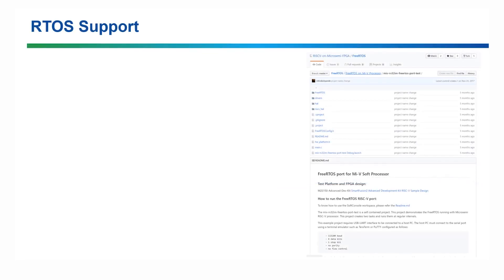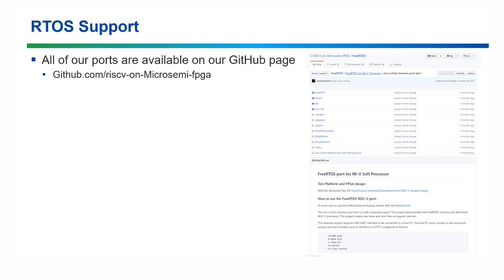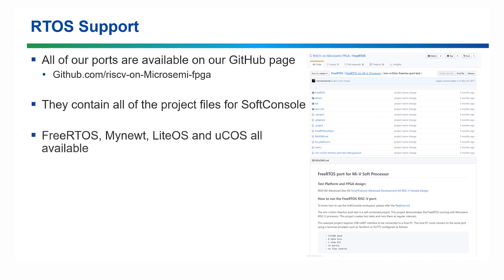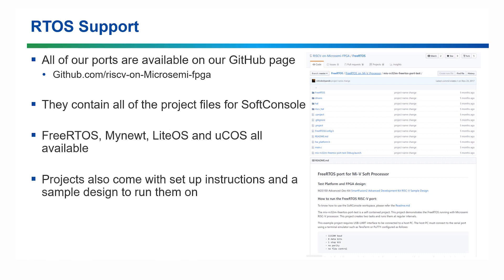Finally, let's have a look at some of the resources available to help you get started using a Mi5. Several RTOSes have been ported to run on the Mi5. You can find all of them on our GitHub page: github.com/riscv-on-microsemi-fpga. They contain all of the project files to run in SoftConsole, and some examples are FreeRTOS, MiNET, LiteOS and uCOS. Projects also come with setup instructions and a sample design to run them on.